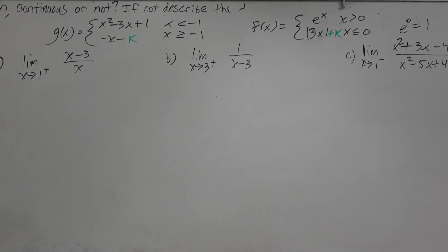So on b, it says find the limit as x is approaching 3 from the right of 1 over x minus 3.